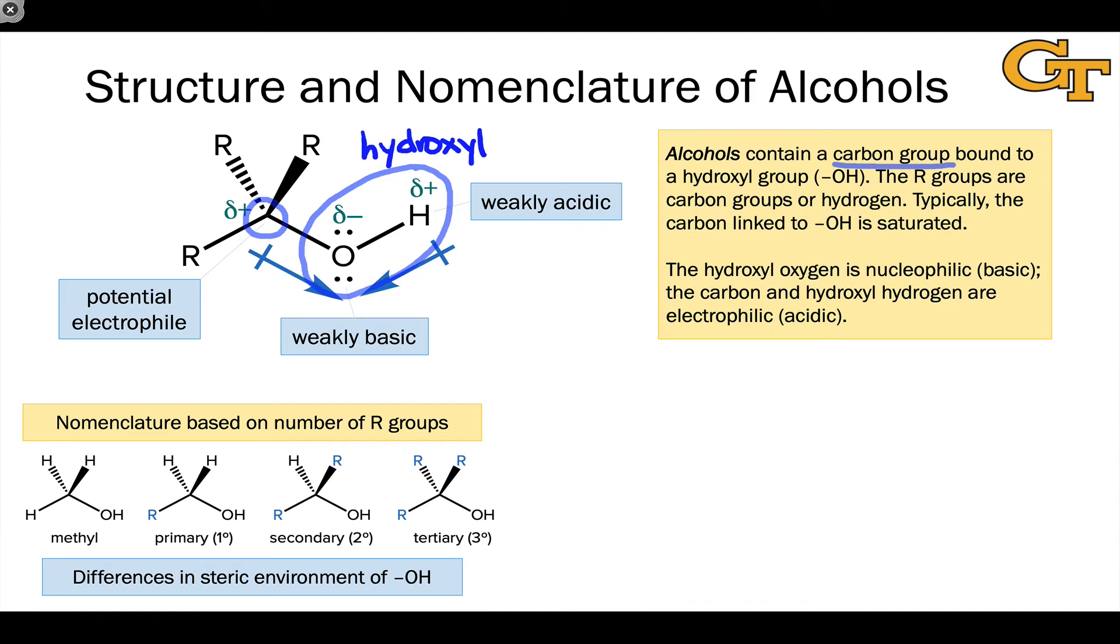Alcohols are often named based on the number of R groups connected to the carbon bearing the hydroxyl group. The reason we use this nomenclature system is because alcohols with different substitution patterns at the carbon linked to the hydroxyl group have different steric environments around the hydroxyl group. For example, an alcohol with three carbon groups linked to that hydroxyl bearing carbon has a much more sterically crowded environment around the alcohol hydroxyl group than, for example, methyl alcohol with three hydrogens in those positions.